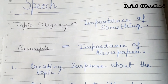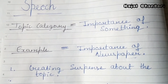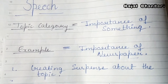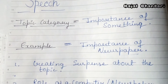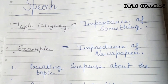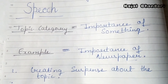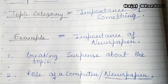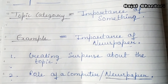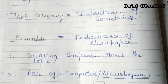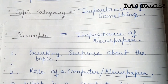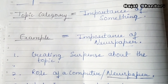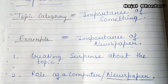So in this way, first you create suspense, then you tell your topic. This is the first step. The second step is the role of newspaper — or computer, or whatever your topic is — which is its role in our life. And the third step is: what is newspaper — what is your topic?